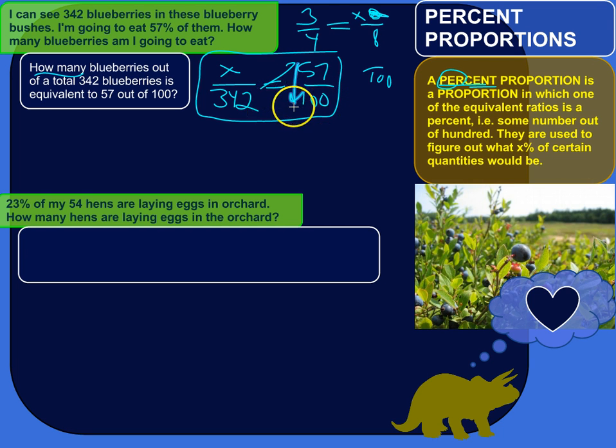I'm going to do it out a little bit more slowly, the second fastest way would be to cross multiply. So x times 100, or 100x, equals, and then cross multiply this way, 342 times 57.